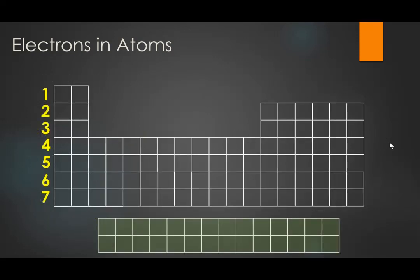There are 7 rows in the periodic table's organizational structure, and those 7 rows correspond to the energy levels of atoms. If you're an element in row 6, you have electrons in up to 6 energy levels but not the 7th. If you're in row 4, you have electrons in 4 energy levels but not the 5th, 6th, or 7th, in your normal ground state.